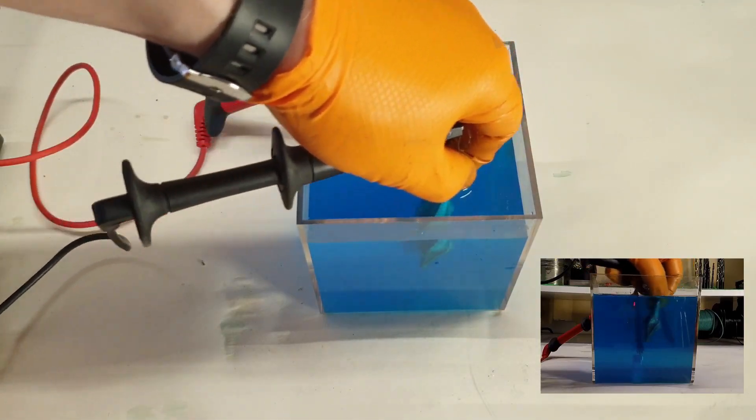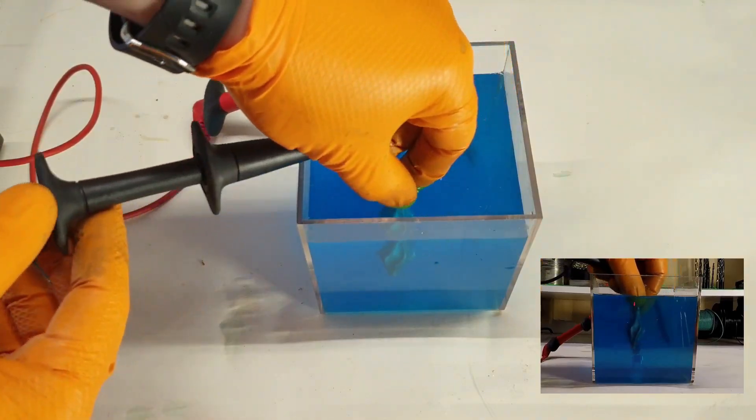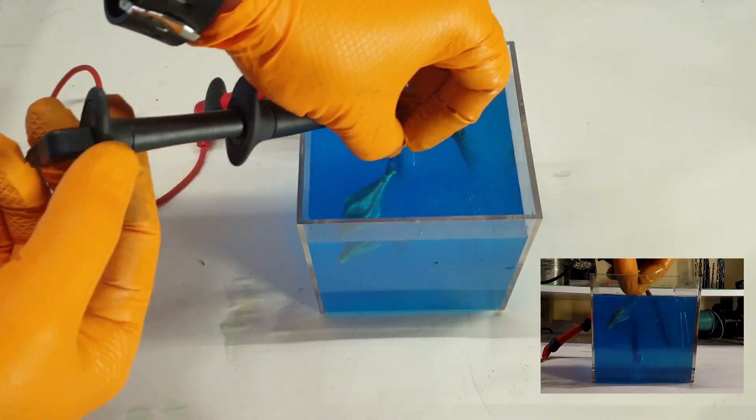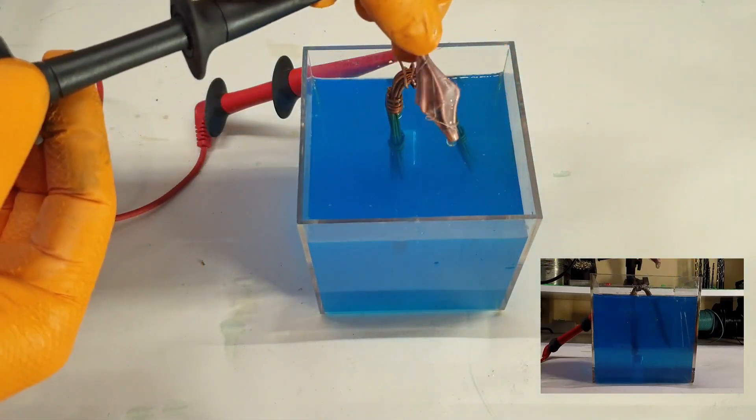Overall, the process should only take a few minutes, but the longer you keep your part submerged, the thicker the copper plating will end up being. Once you're happy the part is completely copper plated, remove it from the solution, wash it with some clean water and dry it immediately.